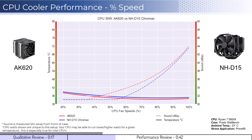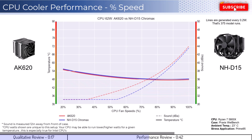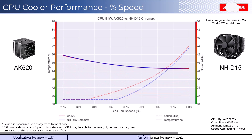With that in mind, we will first take a look at the fan's performance on an idle CPU, which is assumed to be using 30 watts of power. When comparing the AK620 cooler in red to the Noctua NH-D15 cooler in blue, both coolers perform similarly across the board in terms of cooling. However, the AK620 begins to make audible noise around 40% fan speed.